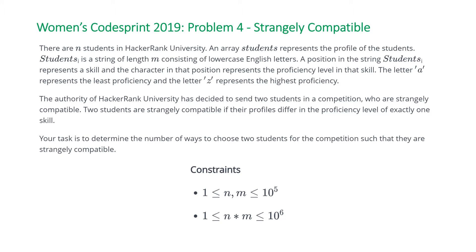The problem states there are n students in HackerRank University. An array students represents the profile of the students. Students[i] is a string of length m consisting of lowercase English letters. A position in the string represents a skill and the character in that position represents the proficiency level in that skill. The letter 'a' represents the least proficiency and 'z' represents the highest. Two students are strangely compatible if their profiles differ in the proficiency level of exactly one skill.